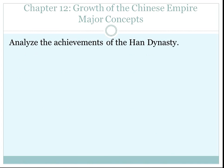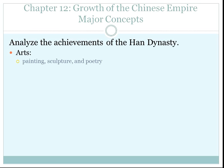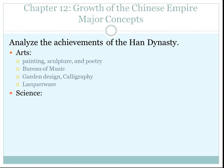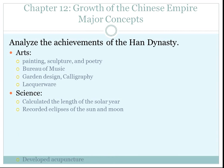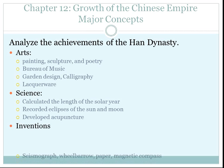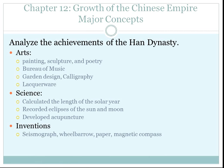The next question is the achievements of the Han Dynasty. In arts, you have printing, sculpture, and poetry. The Bureau of Music was formed. You had garden design, calligraphy, and they were very famous for lacquerware as well. In sciences, Han achieved the calculated length of the solar year, recorded eclipses of the sun and moon, and developed acupuncture as medicine. In inventions, they invented the seismograph, the wheelbarrow, paper, and the magnetic compass. They also established the Silk Road.